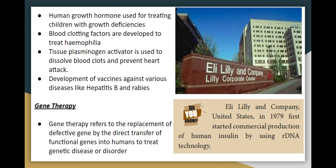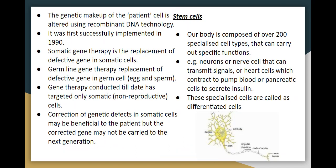If a gene is defective, you can transfer a functional gene to treat the genetic disease — this is called gene therapy. In gene therapy, the defective gene in patient cells is replaced with a functional gene using recombinant DNA technology. The first successful gene therapy was in 1990.